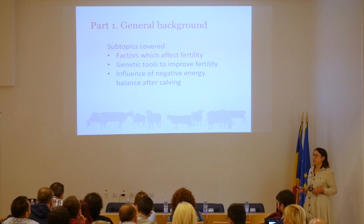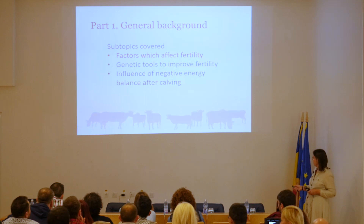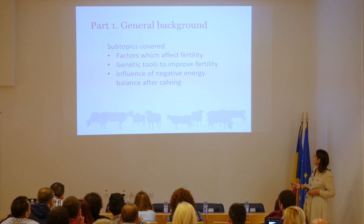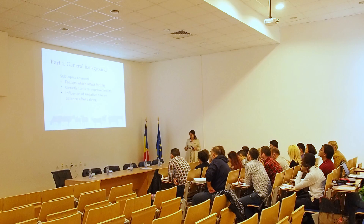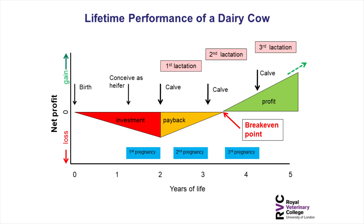The first talk looks at the background to fertility, divided into three sections: factors which affect fertility, genetic tools to improve fertility, and a lot of what I'll be covering relates to negative energy balance around calving. So we're starting with the factors that affect fertility.